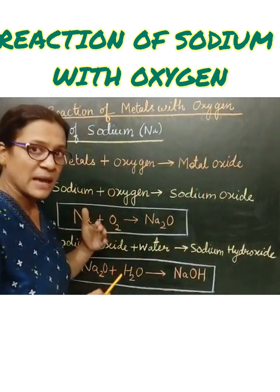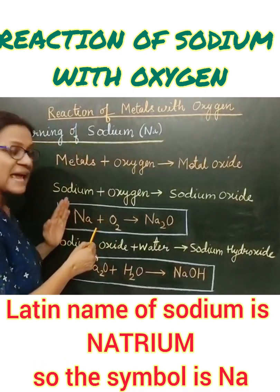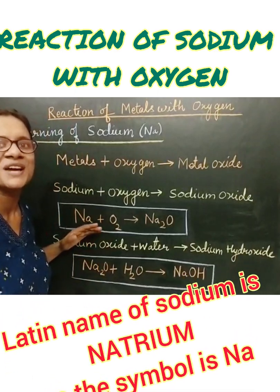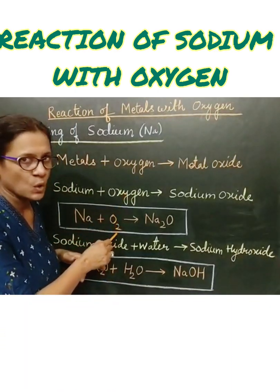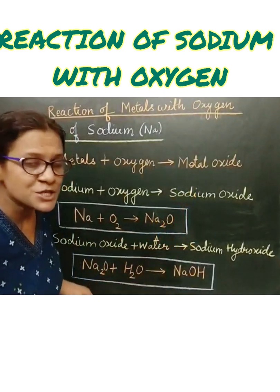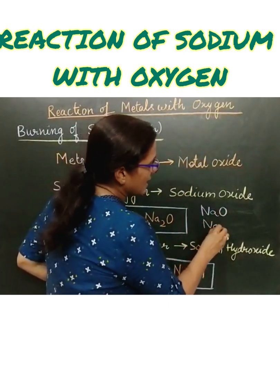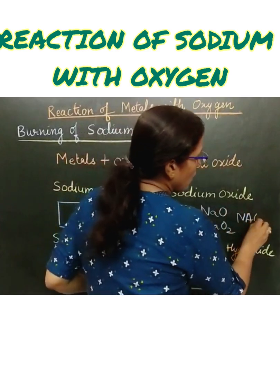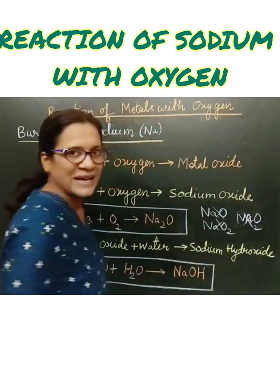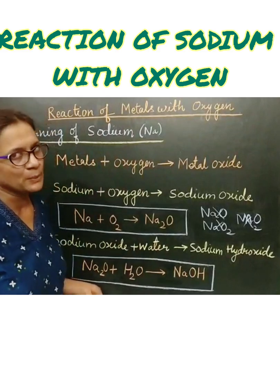When we write the chemical equation using symbols, sodium is represented as Na — capital N, small a — because its chemical name is Natrium. It reacted with oxygen gas O₂ to form sodium oxide Na₂O. Make sure you don't write NaO or NaO₂; those are wrong. The correct formula is Na₂O, which you will study in more detail in class 9.